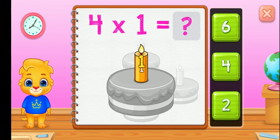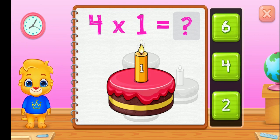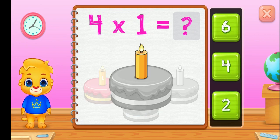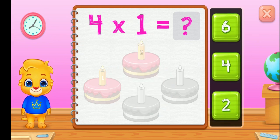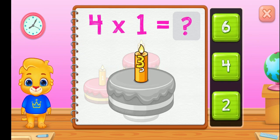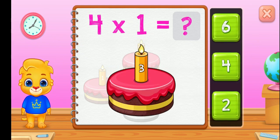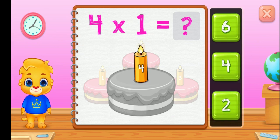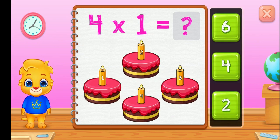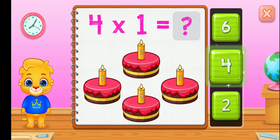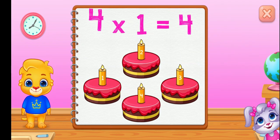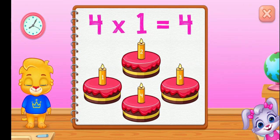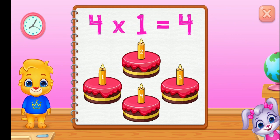One. Two. Three. Four. Groups of one equals four.